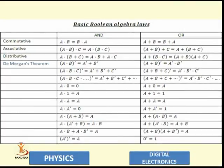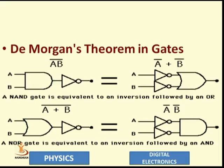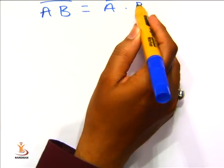Another slide represents the symbol for each and every gate — Boolean expression or Boolean algebra for that gate with their truth tables. De Morgan's theorem in a gate: De Morgan's theorem shows one statement, and this statement is 'break line and change sign.' The first De Morgan's theorem is that A dot B bar is equal to A bar plus B bar.